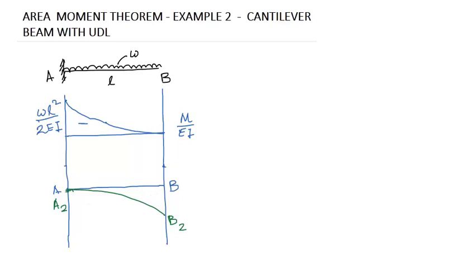From point A, this is the tangent line. The vertical through B is this line. So this intersection point is called point B1. We now know the slope of the beam at A.